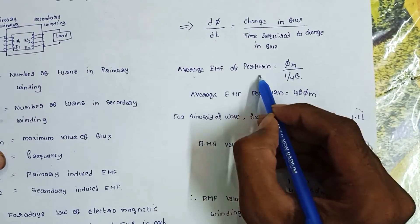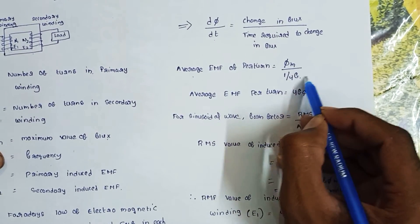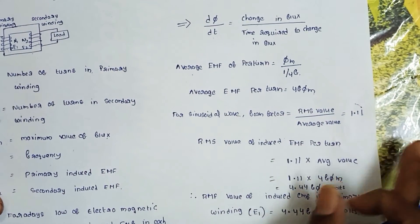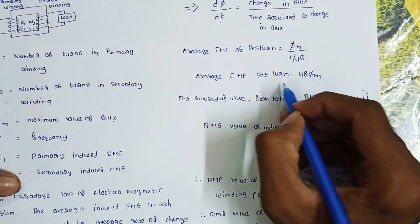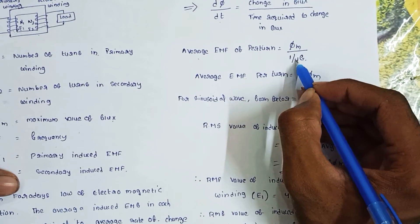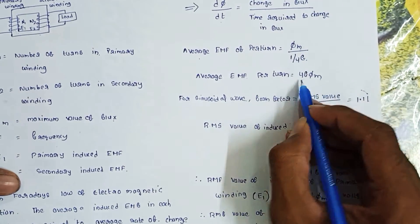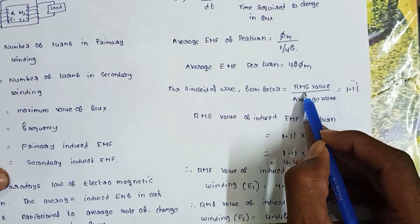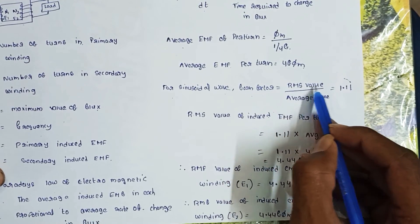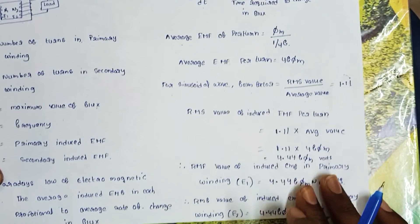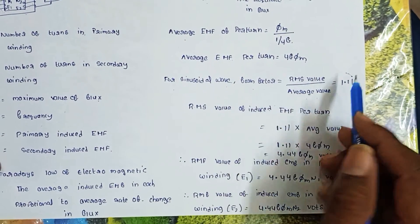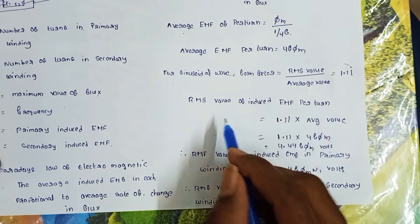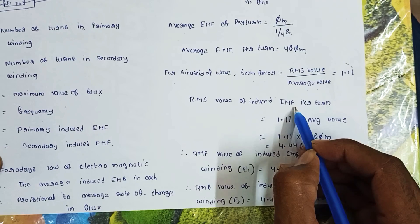The average EMF per turn equals φM divided by (1/4F), where φM is the maximum value of the flux. The average EMF per turn equals 4FφM. For a sinusoidal waveform, the form factor equals RMS value divided by average value, which equals 1.11.